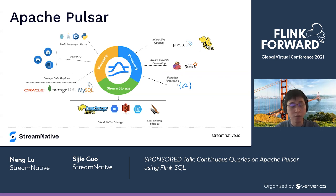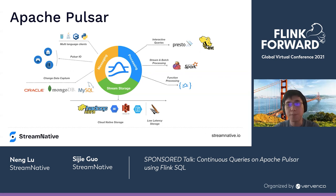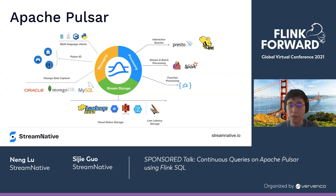They are also actively working to integrate Pulsar with different kinds of data lakes. For the processing part, Pulsar is very extensible and integrates well with different popular frameworks. For interactive queries, Pulsar supports Presto, Trino, and Hive. For stream and batch processing, Pulsar seamlessly integrates with Apache Flink and Apache Spark. Pulsar also developed its own processing framework called Pulsar Functions, used for simple data processing and ETL jobs to simplify development and deployment overhead.